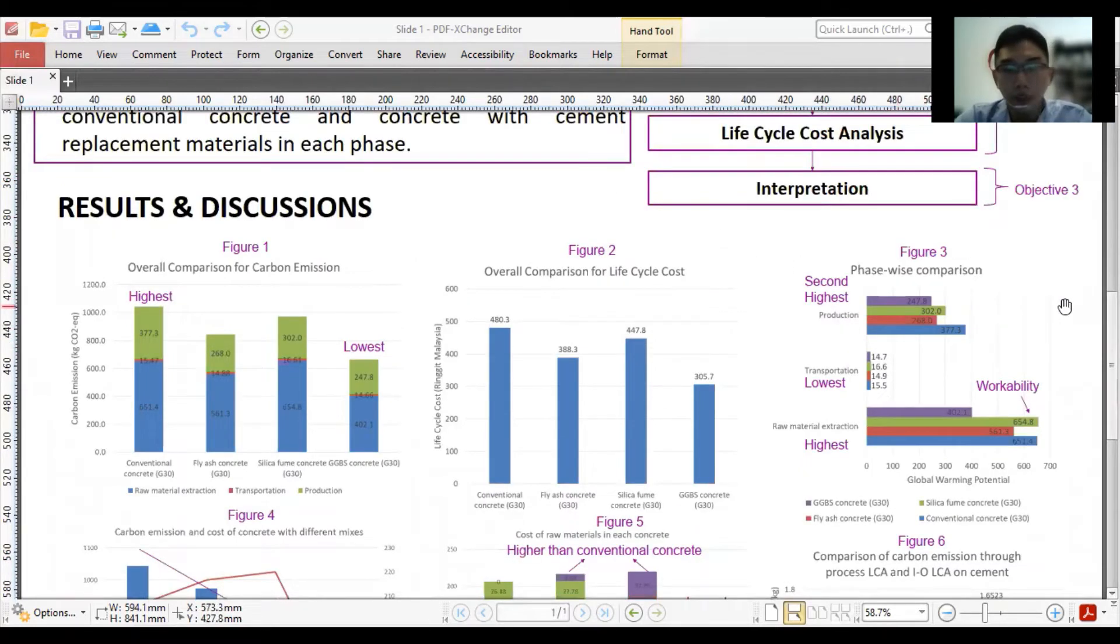Figure 3 shows phase-wise comparison. The raw material extraction has the highest global warming potential followed by the production and transportation phase. In raw material extraction phase, cement production contributed about 90% of global warming potential. In transportation phase, reduction of cement in concrete indicated that more trips can be saved for transportation. In production phase, green materials reduced 20% to 35% of carbon emissions from conventional concrete. In order to reduce greater environmental impact, efforts can be focused on raw material extraction.